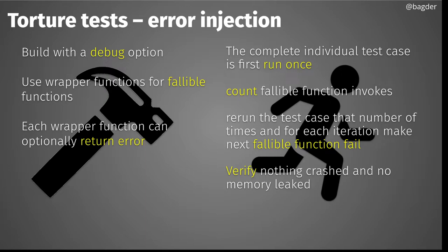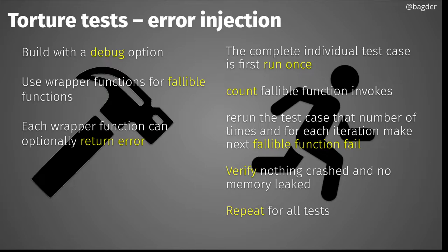Repeating this several hundred times per test, across 1,500-something and an increasing number of tests — that's a lot of testing. It's a very tedious and slow test, so we have methods to avoid running all combinations on every commit. But this approach helps us find flaws repeatedly.